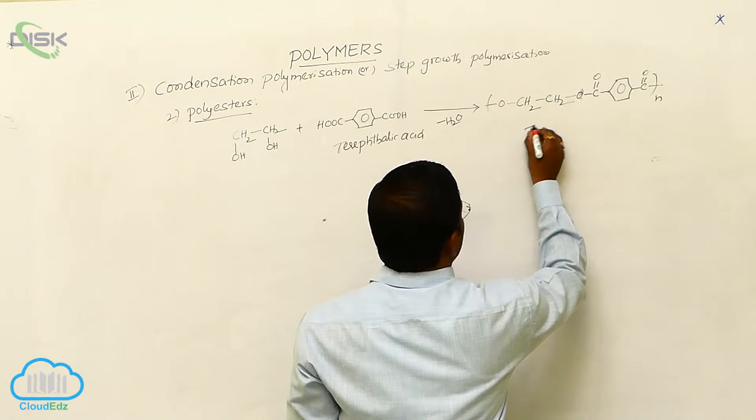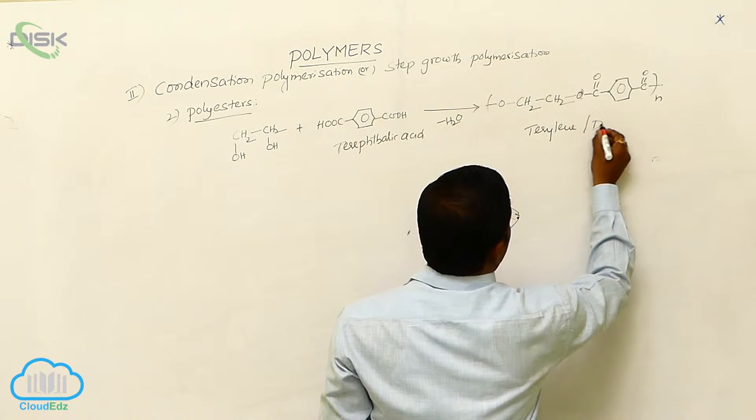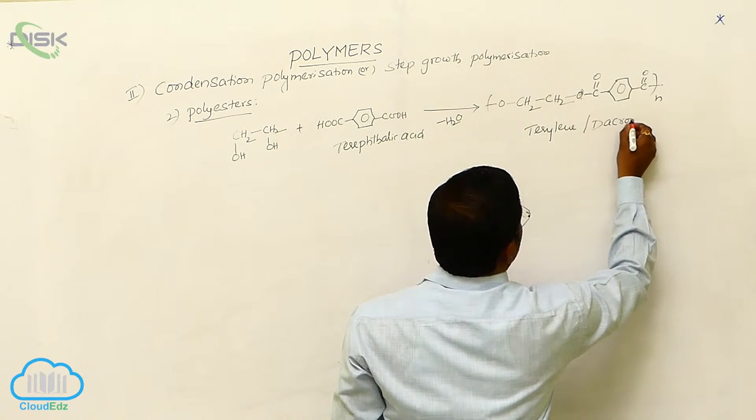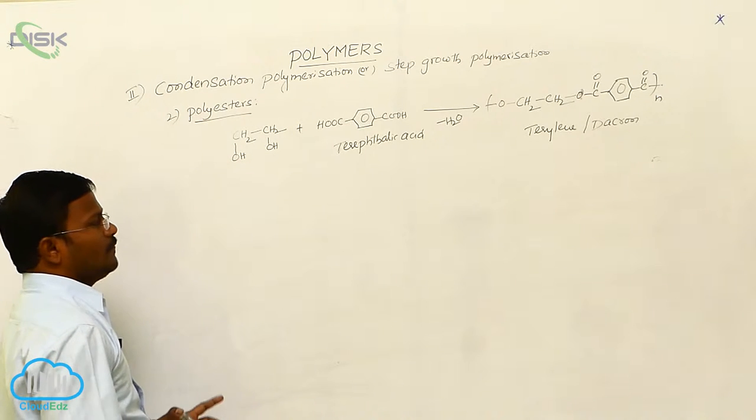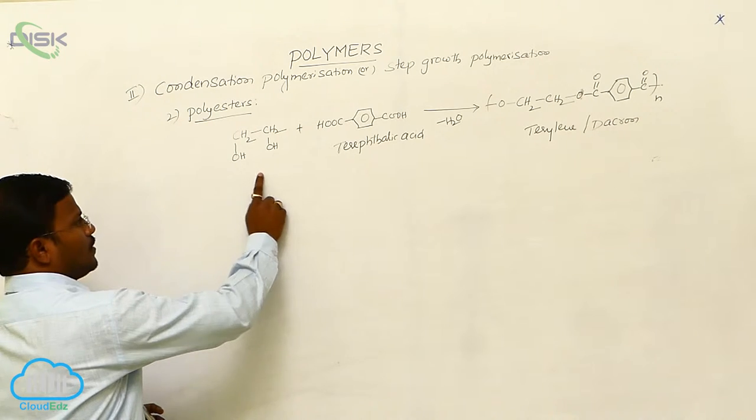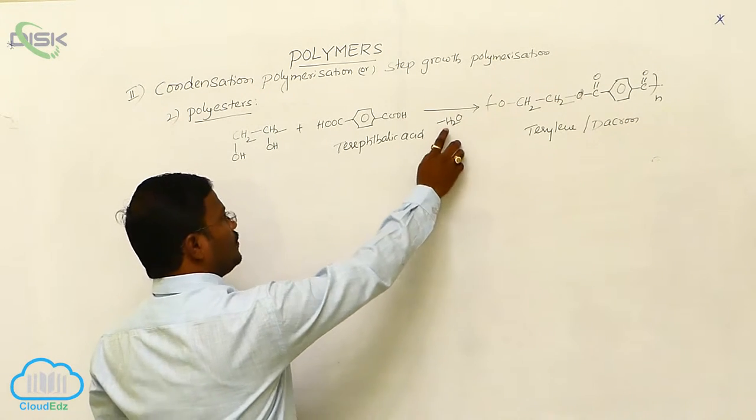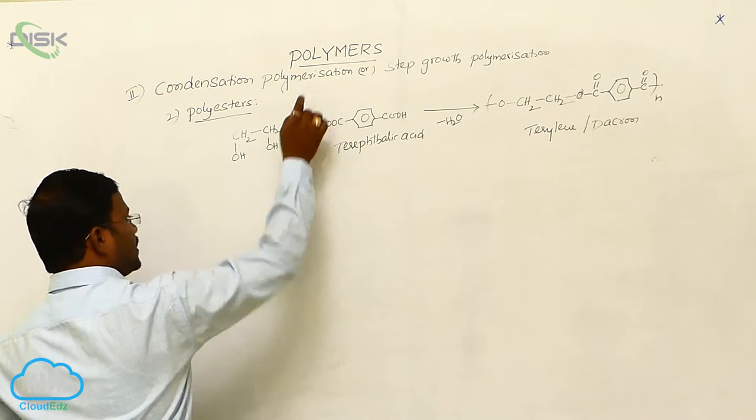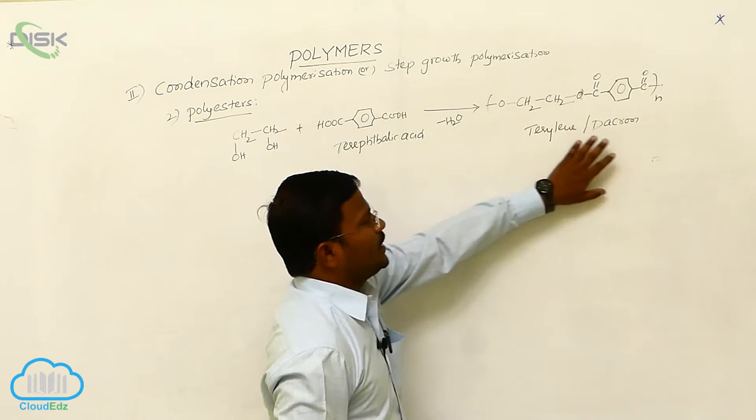The name of the compound is terylene or dacron. It is a polymer resulting from the reaction between ethylene glycol with terephthalic acid and loss of water molecule. This is why it is called condensation polymerization to produce terylene and dacron.